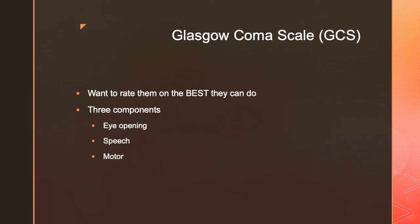For the Glasgow Coma Scale, we want to rate patients on the best that they can do — we're looking for their best performance. When we go in and do our assessment, if they can do some things sometimes and other things other times, we give them a rating based on their best ability in each function. The three components are eye opening, speech, and motor. Let's break down each of these into its respective parts.